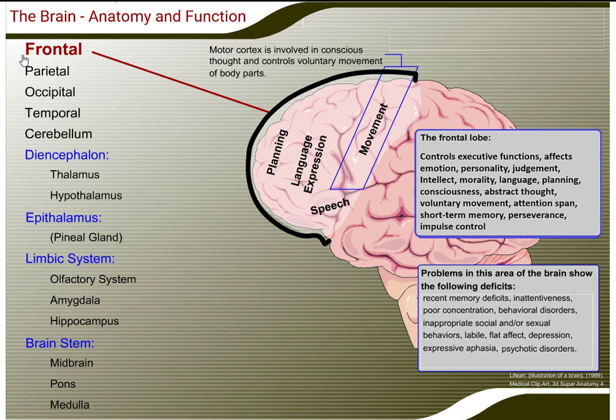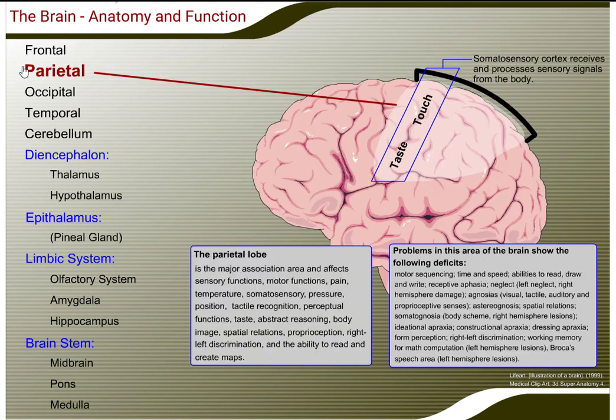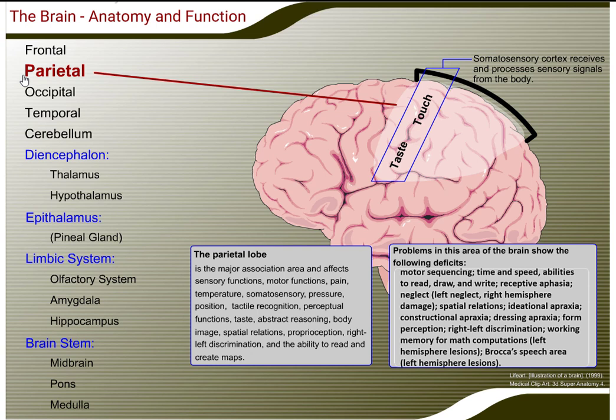The frontal lobe also contains the motor cortex. The motor cortex is an area of the frontal lobe involved in the control of voluntary movements of body parts. The parietal lobe is the major association area and affects sensory functions, motor functions, pain, temperature, somatosensory, pressure, position, and tactile recognition.